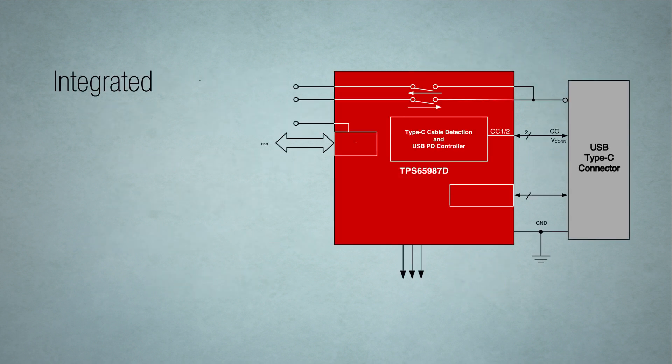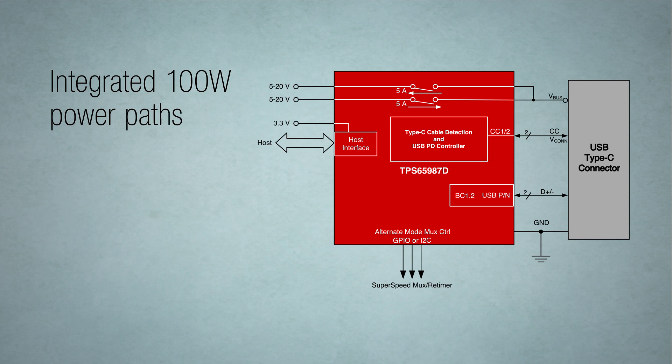In addition to integrated 100-watt power paths, the TPS65987D also includes Integrated Robust Reverse Current Protection, or RCP.